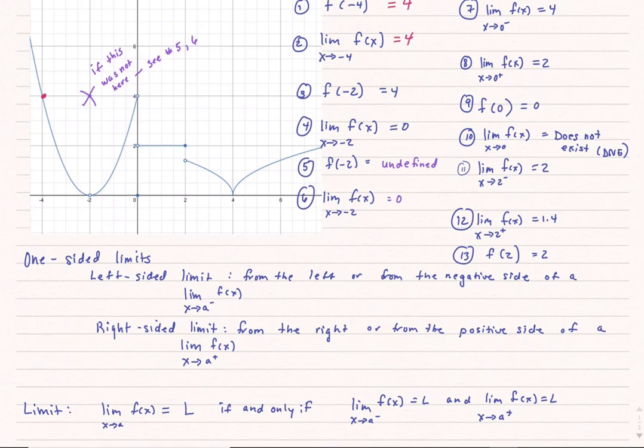I've done two more examples. The limit of f of x as x approaches 2 from the positive side is about 1.4. From the negative side is 2, whereas f at 2 is equal to 2. It happens to be one of the limits.